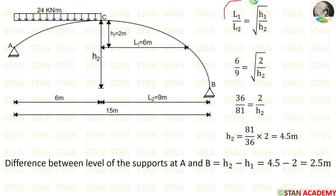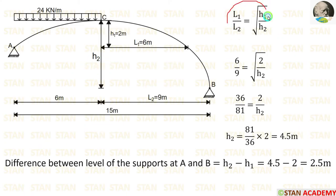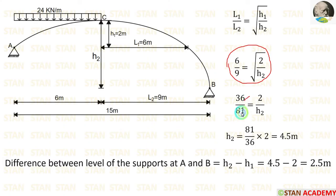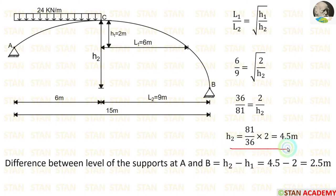We can apply the formula L1/L2 = √(H1/H2). Here L1 = 6 m, L2 = 9 m, and H1 = 2 m. Squaring both sides: 36/81 = 2/H2. Solving, we get H2 = 4.5 meters.